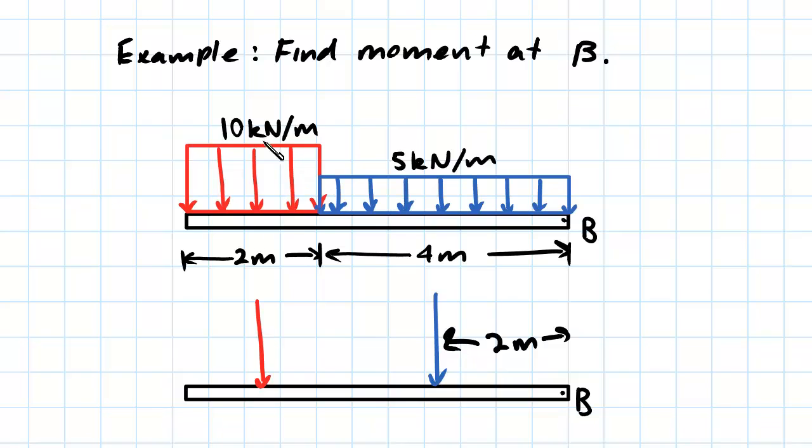Similarly, we do the same for the red load. This acts over a distance of 2 meters, but it's already 4 meters away from B. So this distance will be 4 plus 1, which is 5 meters.